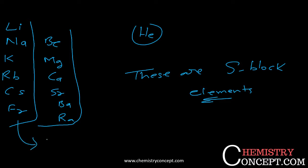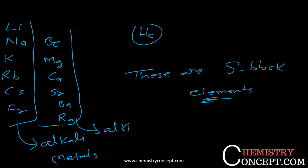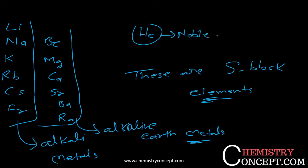This group is known as alkali metals, and this group is known as alkaline earth metals, because they are found in the earth and its core. And this is the noble gas element. So these are s-block elements. Now, why are we calling these s-block elements?